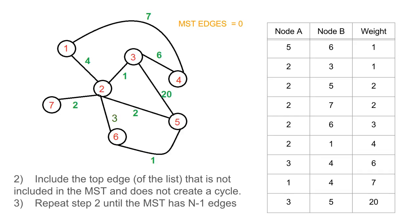Then we're going to start with step two and three. We're gonna do step two until we have N minus 1 edges. Step two, I remind you, is include the top edge of the list that is not included in the MST and does not create a cycle. Let's go ahead and we're gonna include the first edge, which is five to six with weight one. This is an undirected graph, so you can also say six to five with weight one.